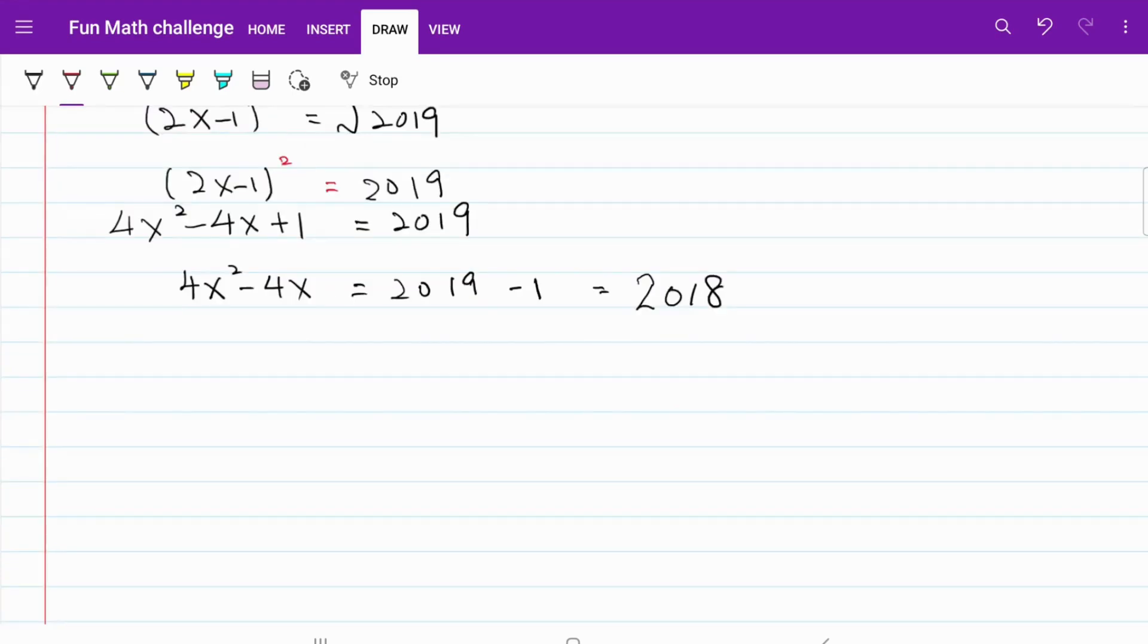Keep in mind, we are looking for the value of 4x cube minus 2,022x minus 2,019 to the power of 2,022. I have 4x cube here, and I have 4x square minus 4x is equal to 2018. I need to find a way to relate these two.